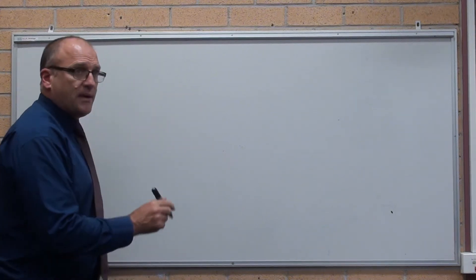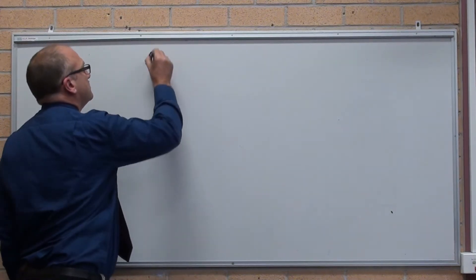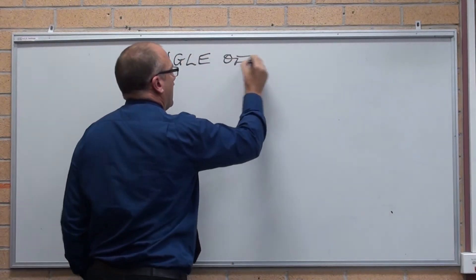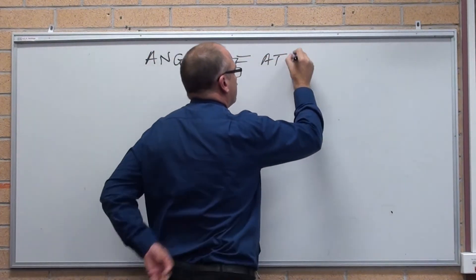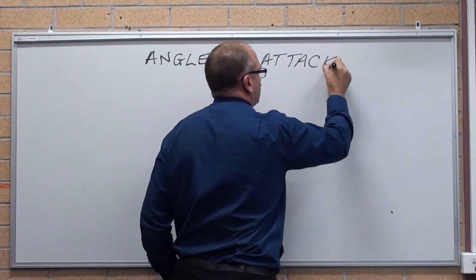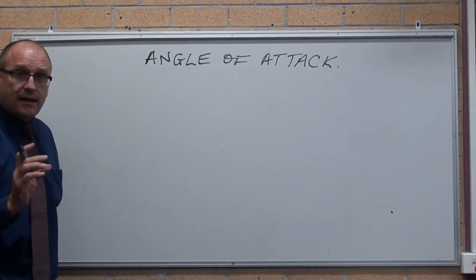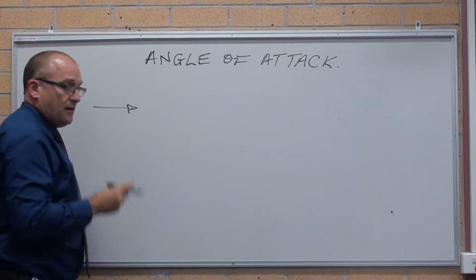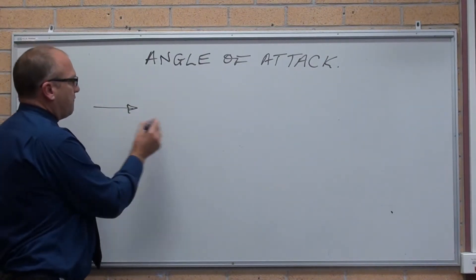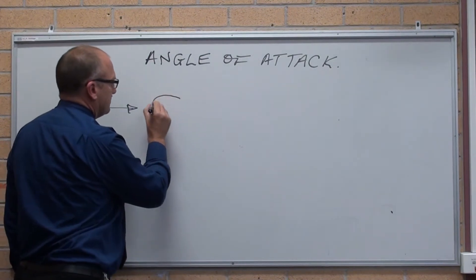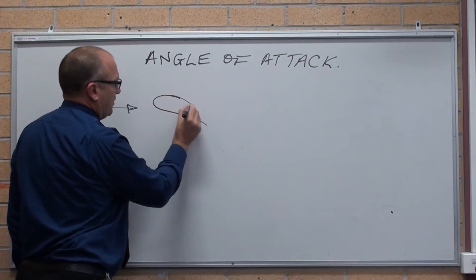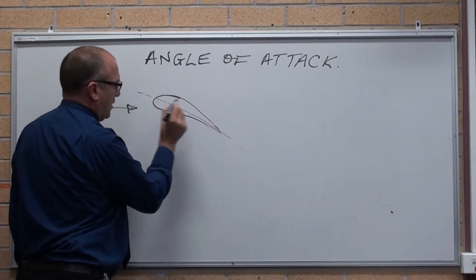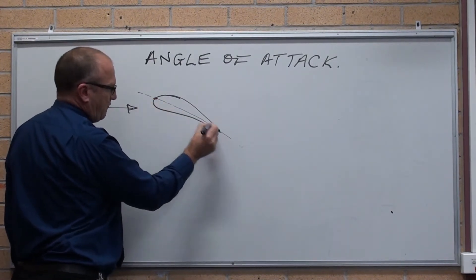Okay, so when we talk about angle of attack in aeronautics, angle of attack is basically, if that is the direction of flight, the wing has got what they call a mean chord line, which is a line going through the center of the wing.